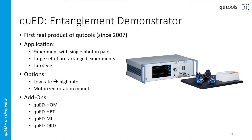You can choose between a manual version and also a motorized version, where the two polarizers in the beam paths are motorized, so you could perform the experiment automatically or also do it remotely, which I will talk a little bit more about on the next few slides.